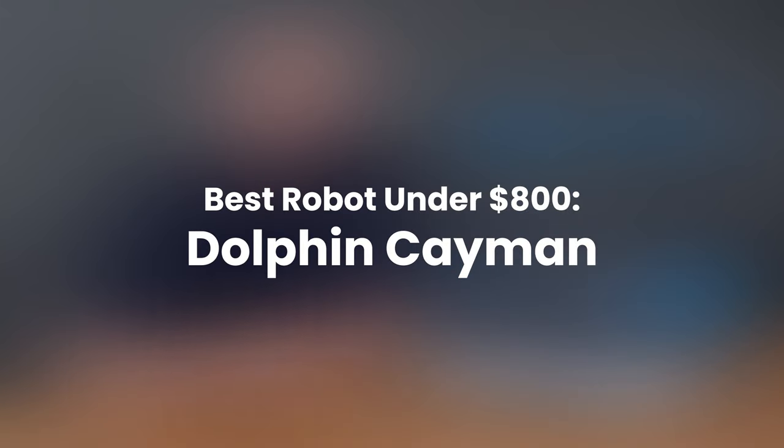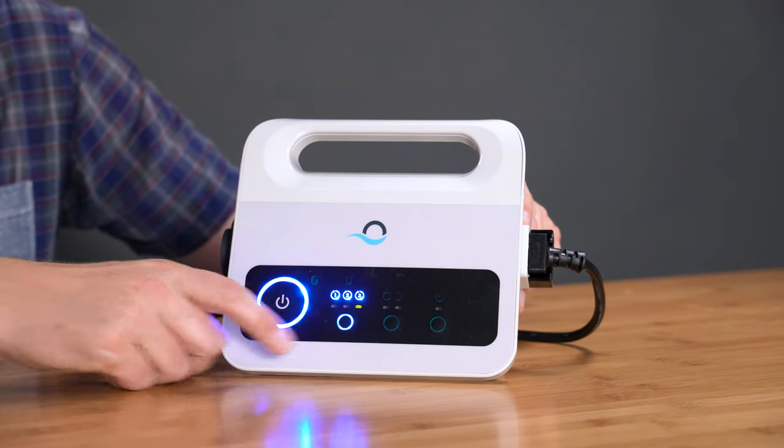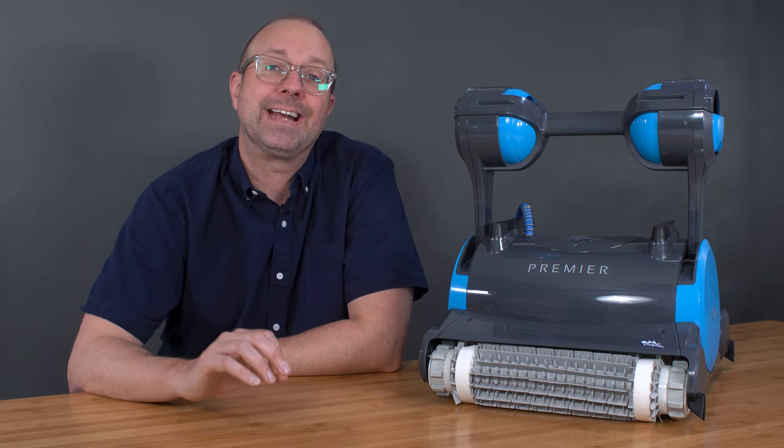Best robot under $800: the Dolphin Cayman. With a budget-friendly price, programmable weekly timer, and an optional nanofilter, it sets the bar and gets the job done.